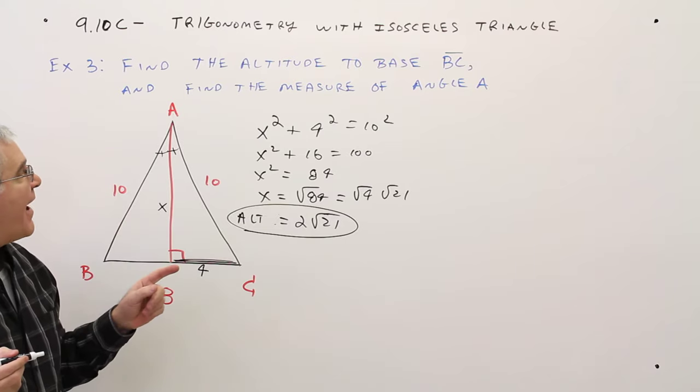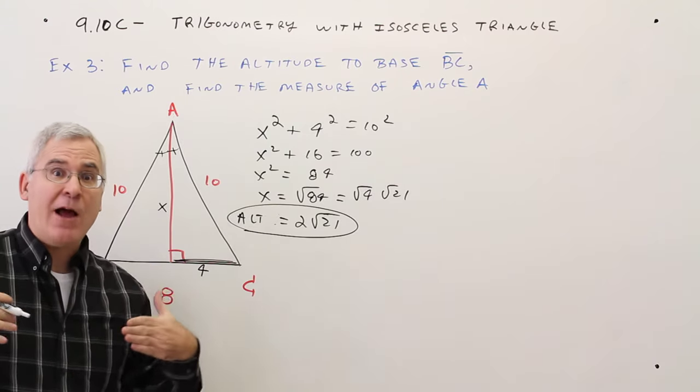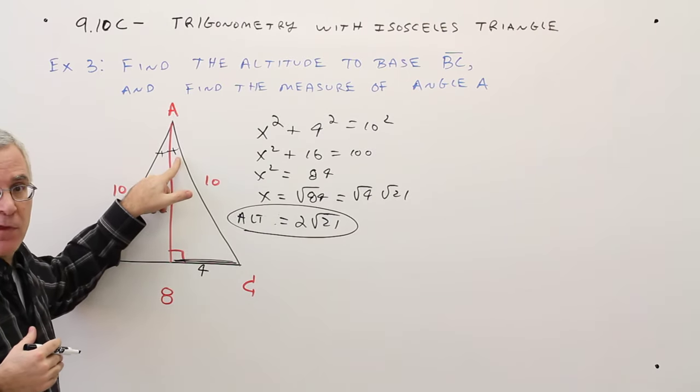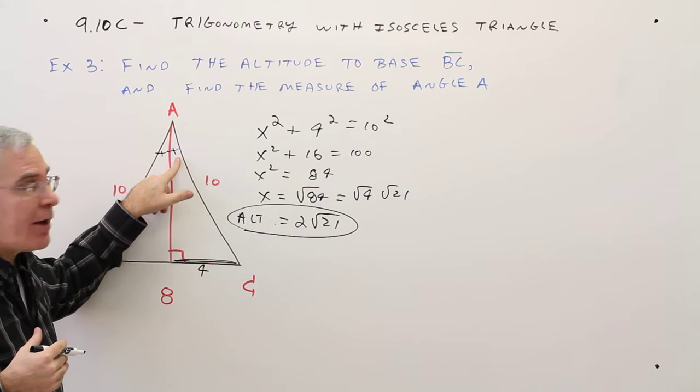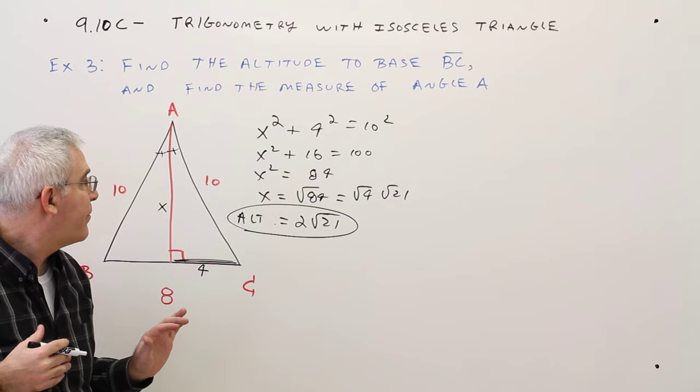Part two, find the measure of angle A. To use trigonometry for right now, you need right triangles. We have a right triangle. So what I'll do is I'll find the measure of this angle using SOHCAHTOA, and then once I find that, I'll just double it to find the measure of angle A.